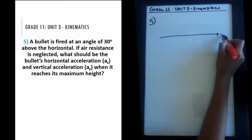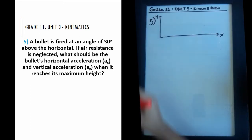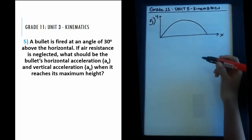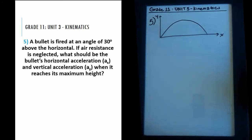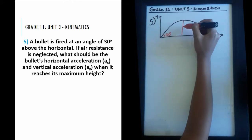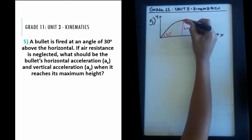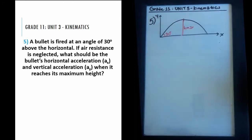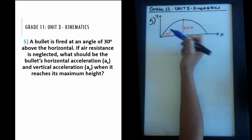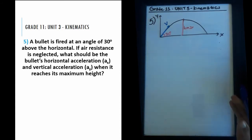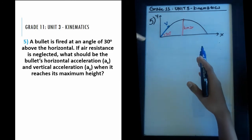We have an X direction and a Y direction. The projectile starts, goes up, reaches a maximum height H-max, and comes back down. The bullet is projected at 30 degrees — that angle refers to the initial velocity. We're asked to find the acceleration in the X and Y directions at maximum height. Since we're talking about acceleration in X and Y, let's divide the velocity into its components.